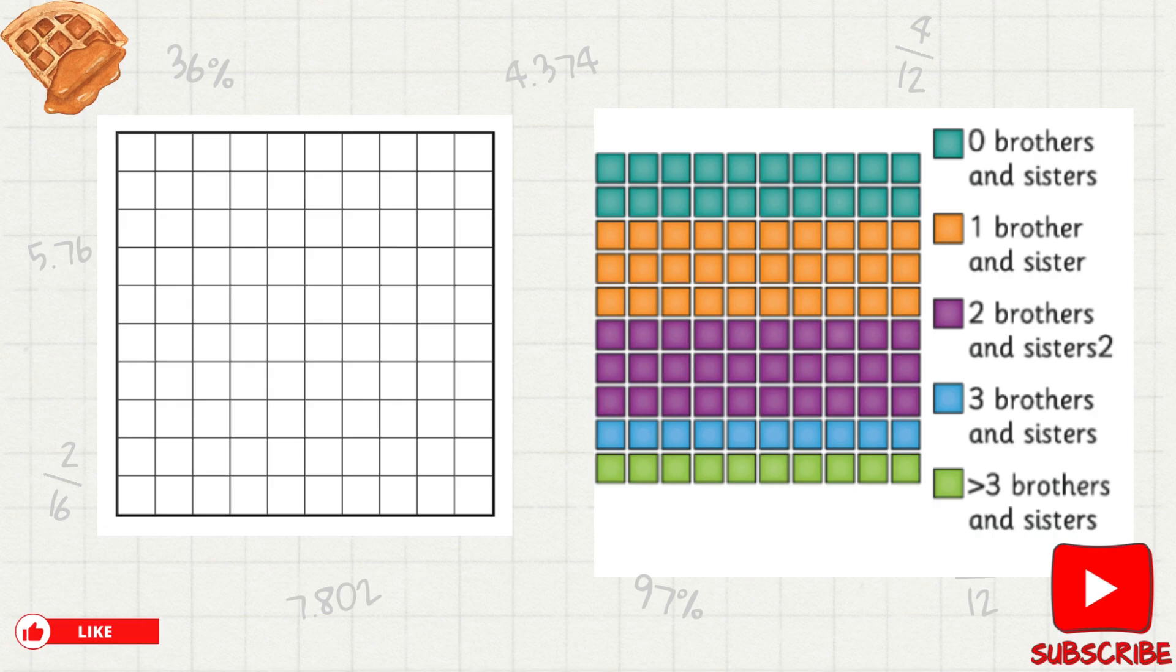In this case we can see that three rows are color orange, which means that 30% of this population has only one brother and sister. As you can see, it's a visual representation of the fraction.